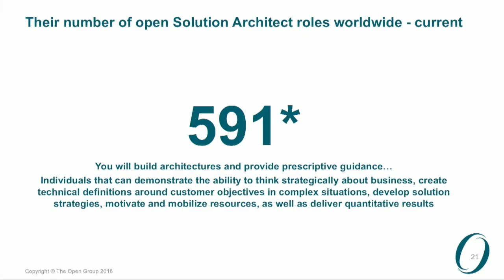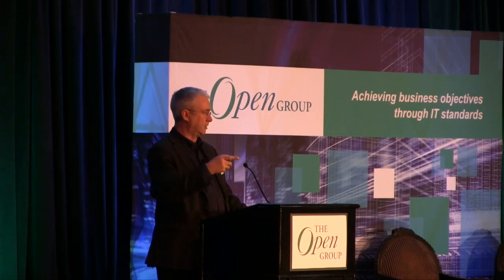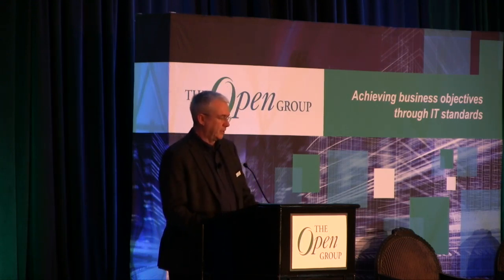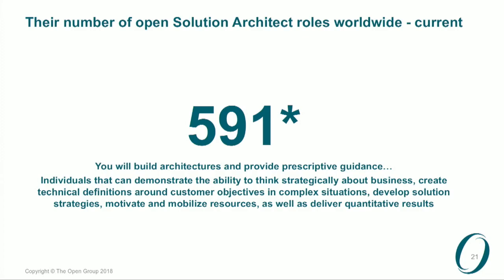On their careers website, the number of open solution architect roles worldwide as of midnight last night is 591. As I've watched it from roughly November of last year, I've never seen the number drop below 450 on a monthly basis — so the number is going up, not down. That doesn't include what they class as enterprise architects who go out and talk to C-level folks. The characteristics of their solution architects: you'll build architectures, provide prescriptive guidance from a digital native company — who would have thought it — think strategically about business, create technical definitions around customer objectives, develop solution strategies, motivate and mobilize resources, and deliver quantitative results.